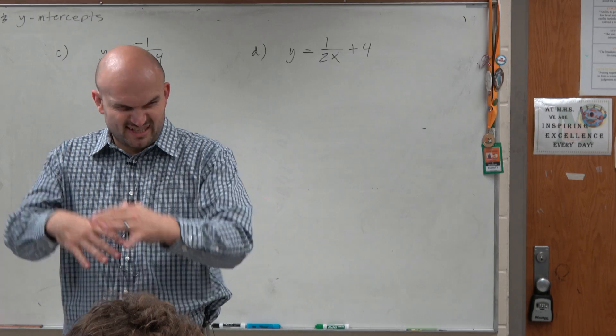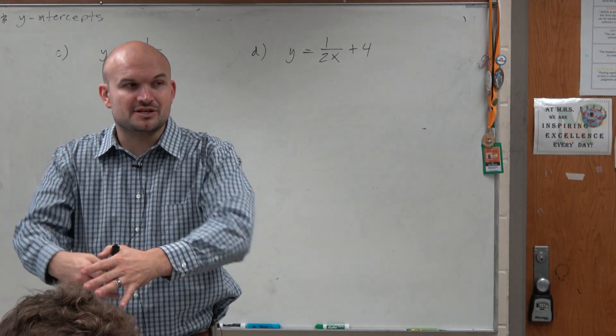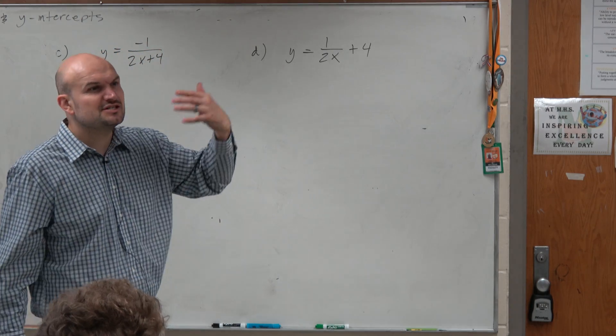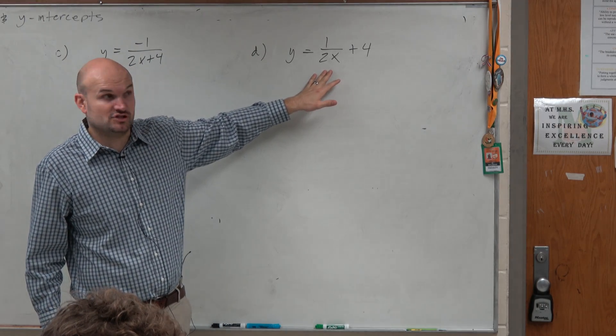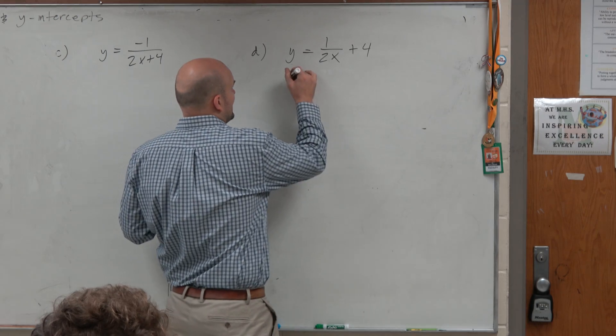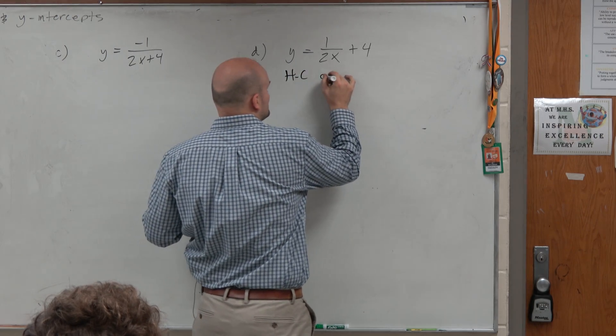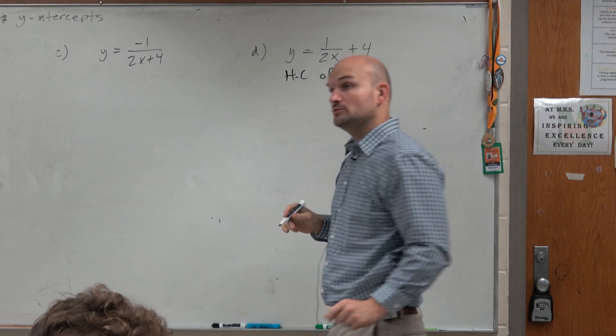Now, the first thing I'm going to do, just to kind of review—this isn't what I'm asking you guys to do—but let's just review our transformations. We're multiplying by 2 inside of the function, right? So if you guys remember, that is a horizontal compression of 2.